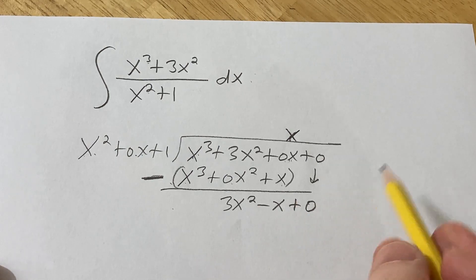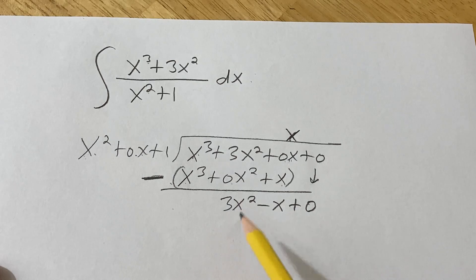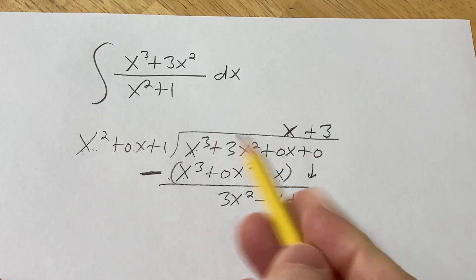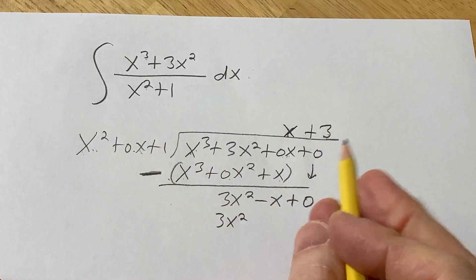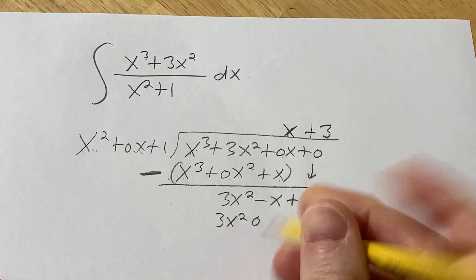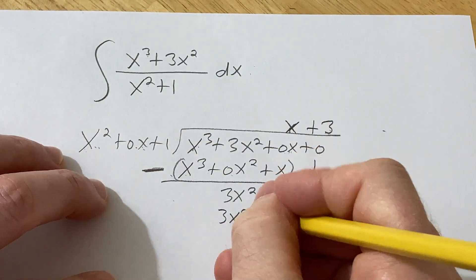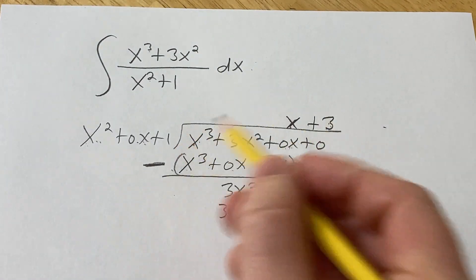And then you repeat the process. What do you multiply by x squared in order to get 3x squared? Well, a positive 3. And then you multiply. 3 times x squared is 3x squared. 3 times 0x is 0x. 3 times 1 is 3.